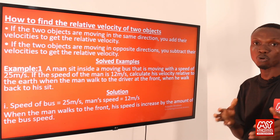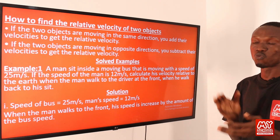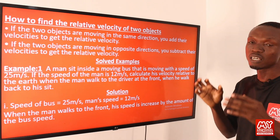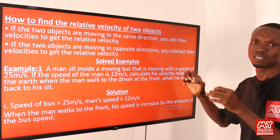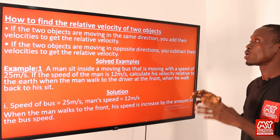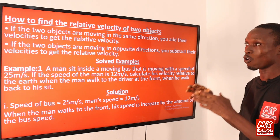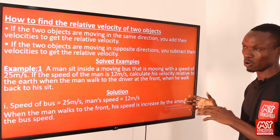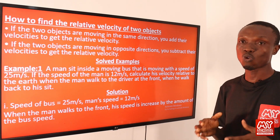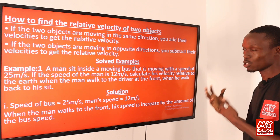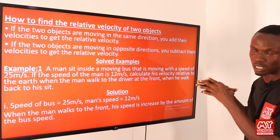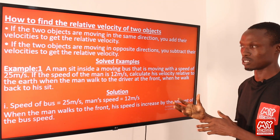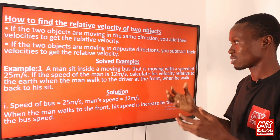When performing calculations involving relative motion, bear in mind: first, if the two objects are moving in the same direction, add the velocities of the two objects to get the relative velocity. Second, if the two objects are moving in opposite directions, subtract the two velocities to get the relative velocity.